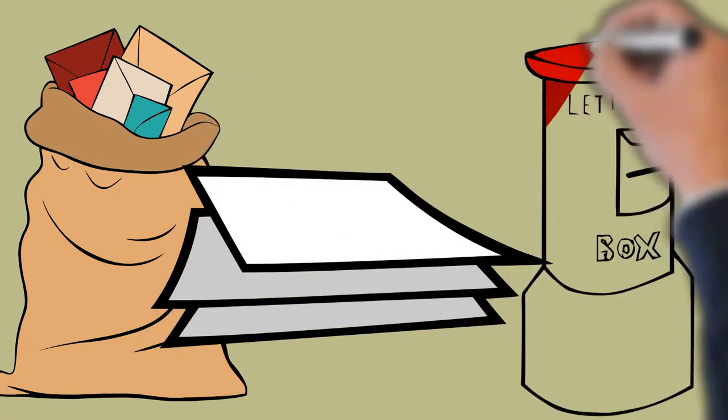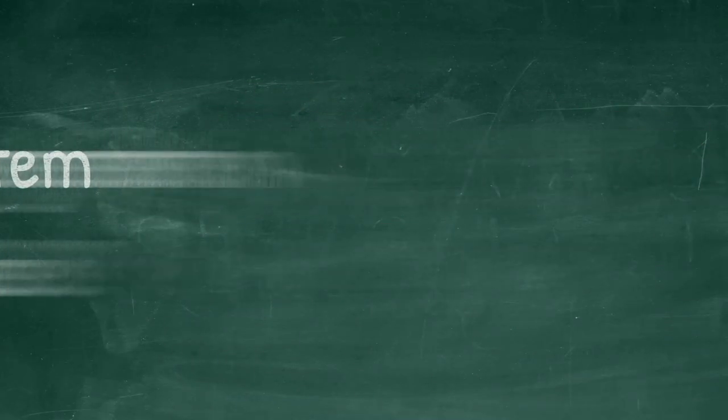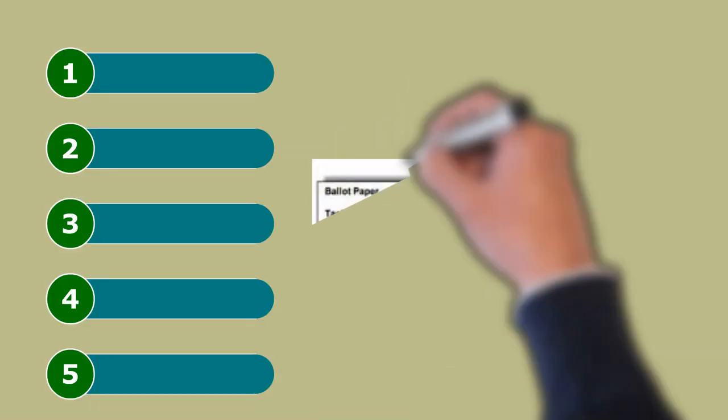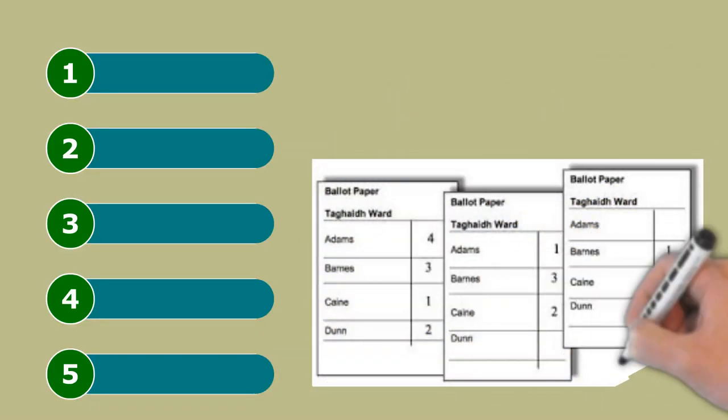The law states that the election vote has to be conducted by post only. What voting system is used? The union uses the single transferable vote system. Members indicate their preferred candidates in order.